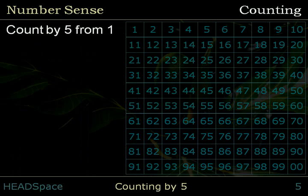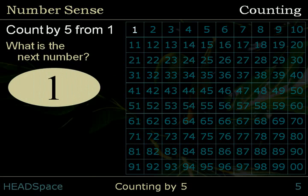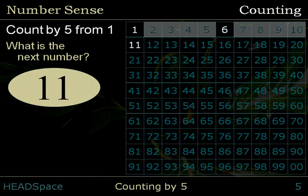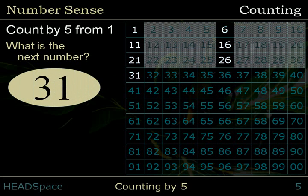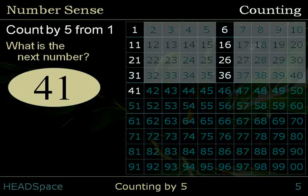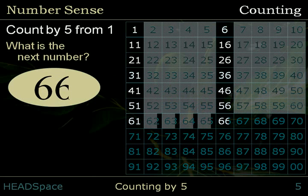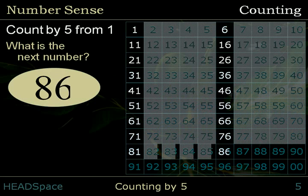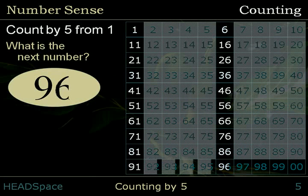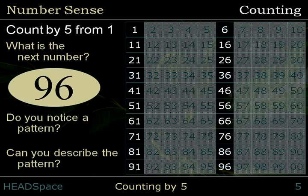Count by 5 from 1. What is the next number? 1, 6, 11, 16, 21, 26, 31, 36, 41, 46, 51, 56, 61, 66, 71, 76, 81, 86, 91, 96. Do you notice a pattern? Can you describe the pattern?